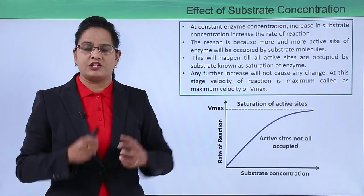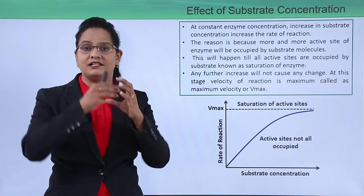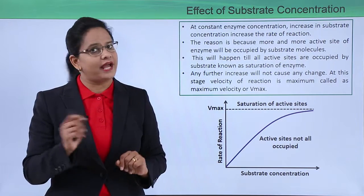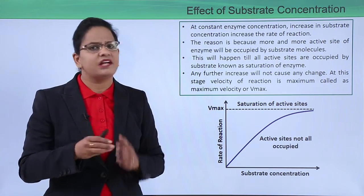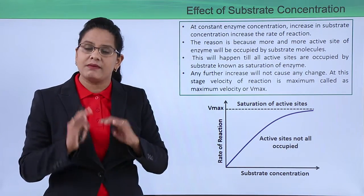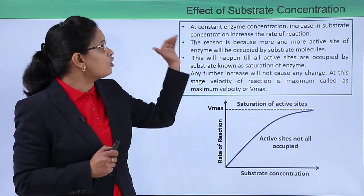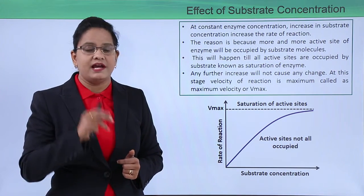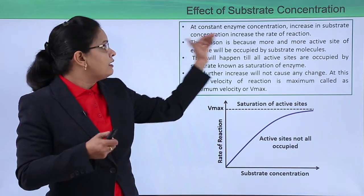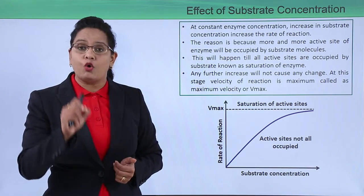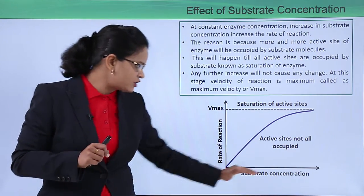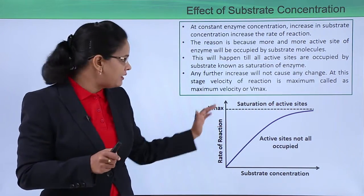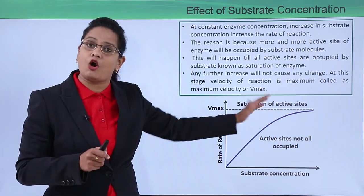Next is substrate concentration. When substrate concentration is higher, more and more enzymes will interact with substrate, but there comes a point when enzymes and substrates are saturated with each other. Beyond that point there is no further change in activity. Assuming constant enzyme concentration, as substrate concentration keeps increasing the rate of reaction increases, but only up to a certain point — until all the active sites are occupied.